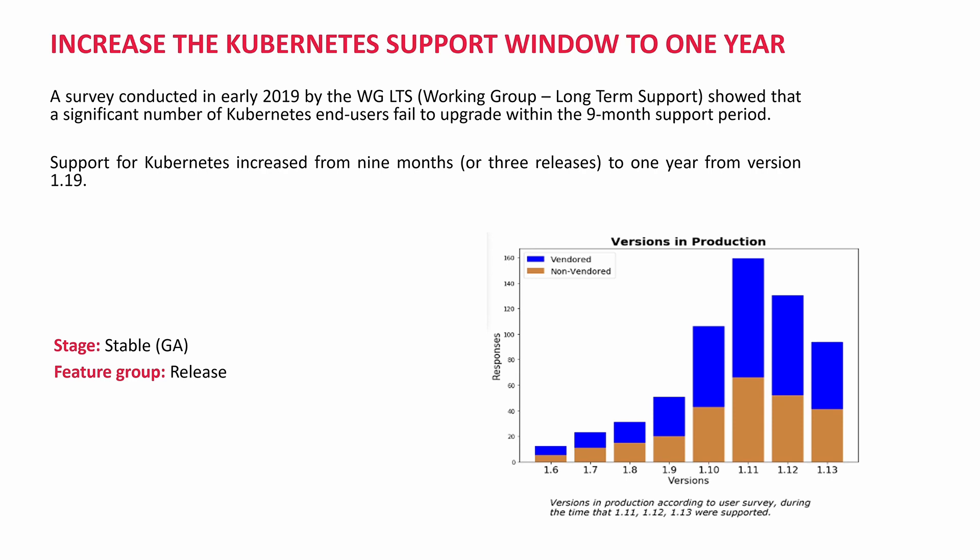The 3 releases — 1.10, 1.11, and 1.12 — were supported by Kubernetes. During that time, customers were still using 1.6, 1.7, 1.8, and 1.9. So for more than 3 to 6 months, several customers used an unsupported Kubernetes version in production. Now, with the 1-year timeframe, they can move forward. They have enough time to upgrade the cluster. It's a stable release.